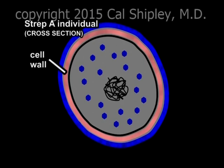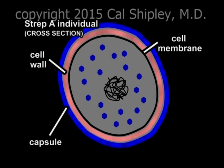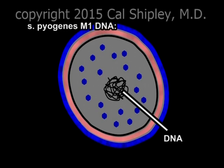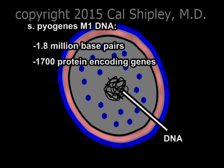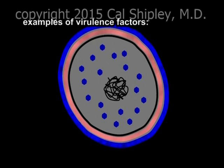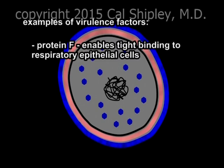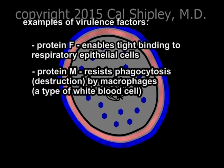In cross-section, we see the cell wall, lined on its inner wall by the membrane, and surrounded by the capsule. Centrally located within the bacterium is its DNA. The genome of one species of Strep pyogenes has been sequenced and found to contain 1.8 million base pairs and about 1,700 protein-encoding genes, as well as 40 virulence-related genes, which may explain why Strep pyogenes causes a wider variety of diseases in humans than any other bacteria. Two examples of virulence factor proteins are protein F, which allows Strep pyogenes to bind tightly to respiratory epithelial cells, and protein M, which allows the bacterium to resist phagocytosis by white blood cells.